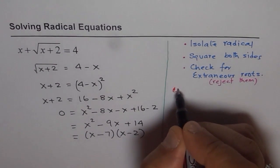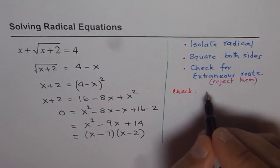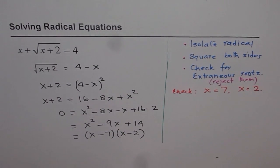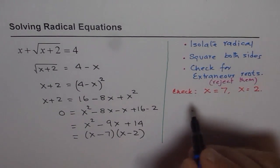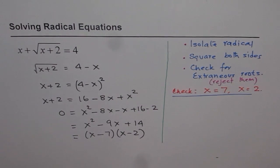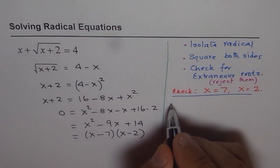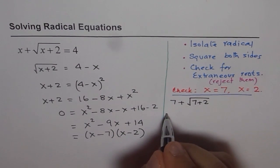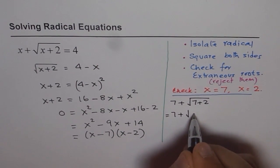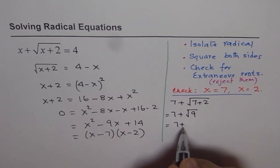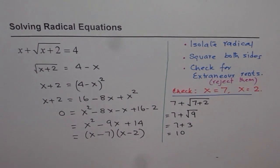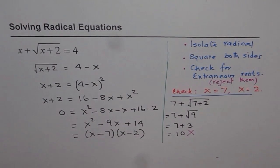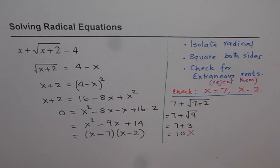So, let's perform the check. We have two solutions which are x equals to 7 and x equals to 2. First we should check and then only we can write down our answer. So, let's substitute 7 in the equation. We get 7 plus square root of 7 plus 2. That gives us 7 plus square root of 9. That is 7 plus 3 and that is equals to 10. Well, that is not correct. So, that is not the solution. What we are looking for is 4. So, this is not the right solution.